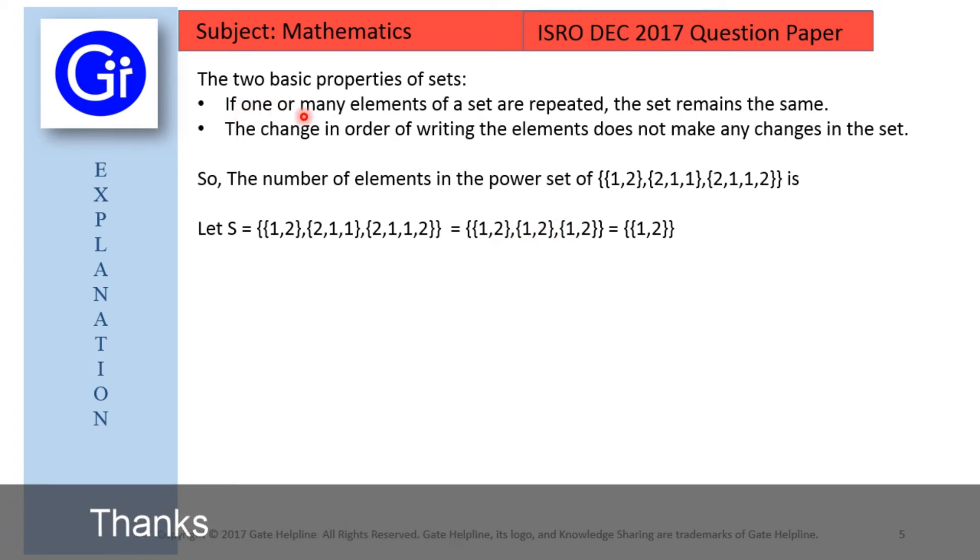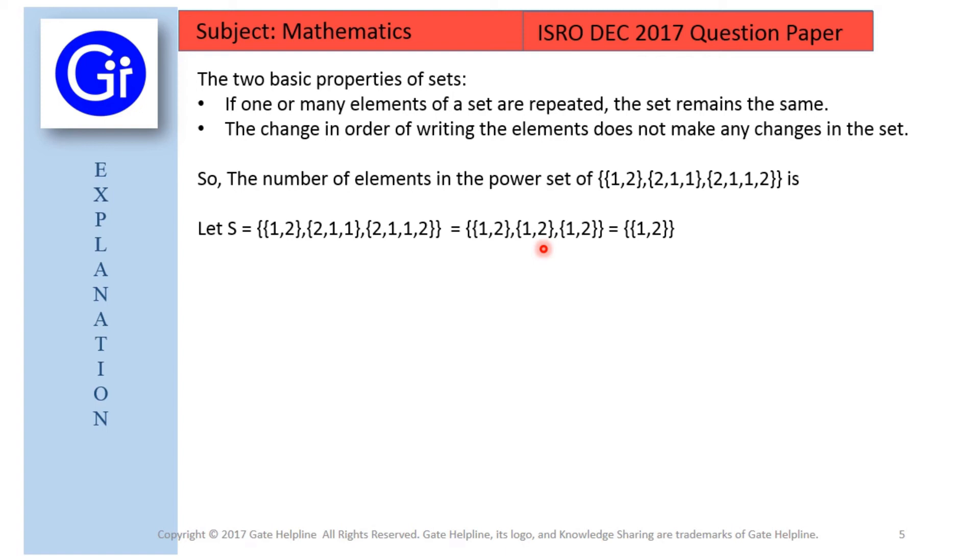So with the help of first property only we will delete the redundant elements and we are left with a single element only that is {1, 2}.